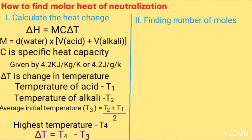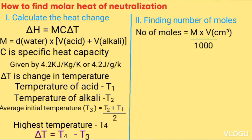Step two: find the number of moles that evolved the heat above. Because you are dealing with both solutions — the acid and the alkali — the number of moles is obtained from molarity times volume over 1000. When the mole ratio between the acid and alkali is 1:1 and the moles of acid equal the moles of alkali, use either value. If the number of moles differ but the ratio is 1:1, use the smaller number of moles because the larger is in excess.